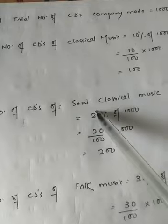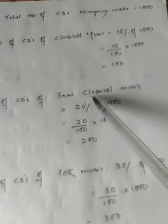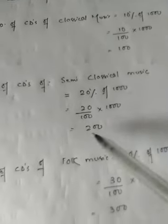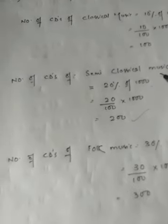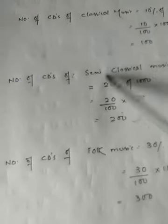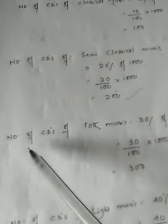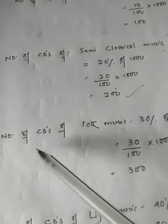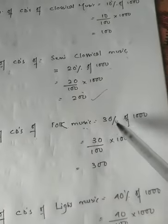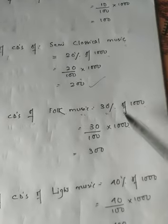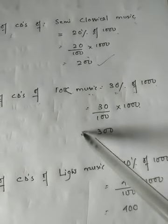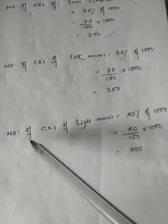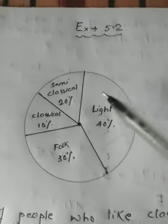The number of CDs of semi-classical music: semi-classical music is 20 percent, so 20 percent of 1000 equals 200 CDs. The number of CDs of folk music: folk music is 30 percent, so 30 percent of 1000 is (30/100) × 1000 = 300 CDs of folk music.